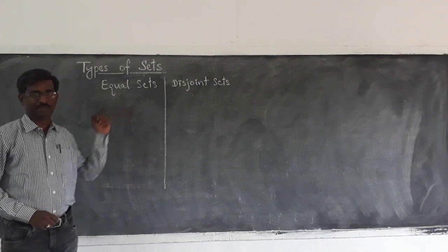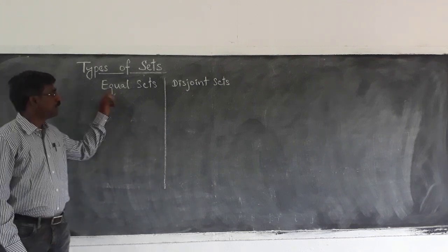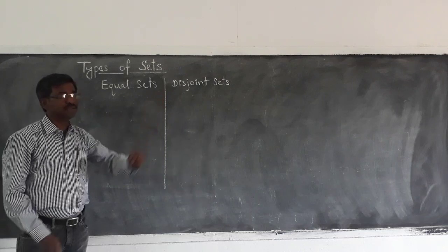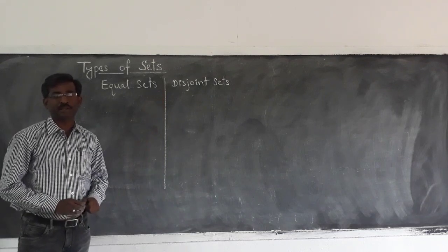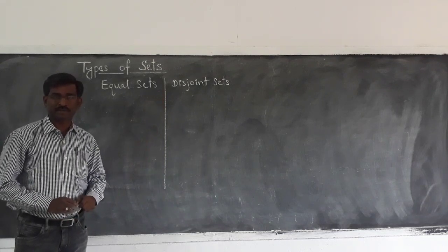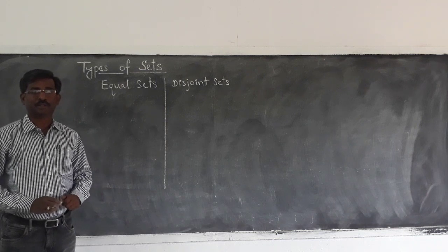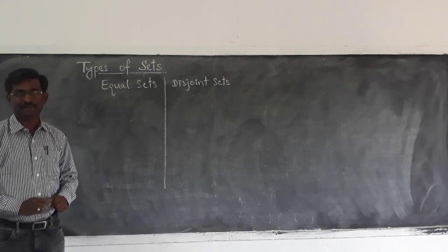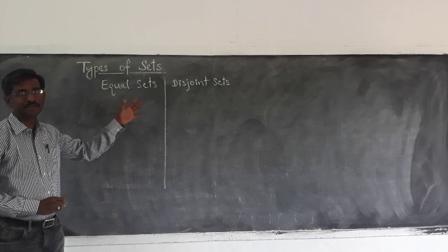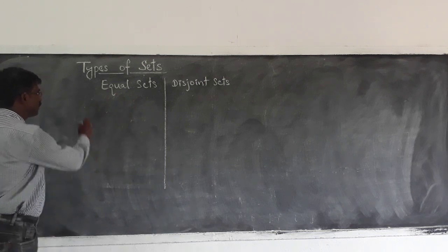We have two types: one is called equal sets and the next one is disjoint sets. We need more than one set to understand these two concepts.